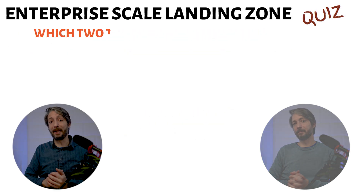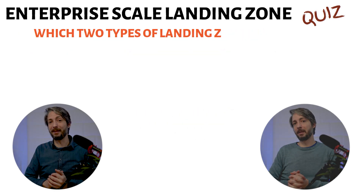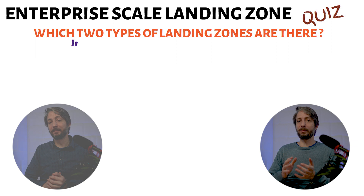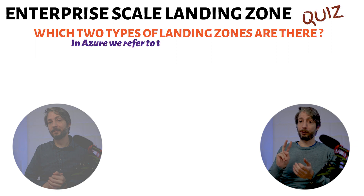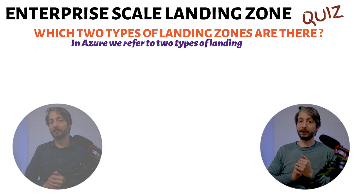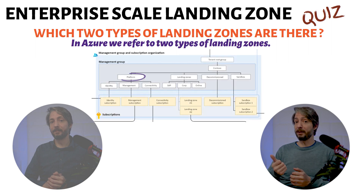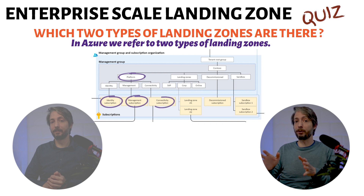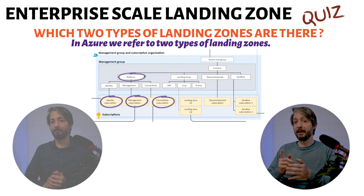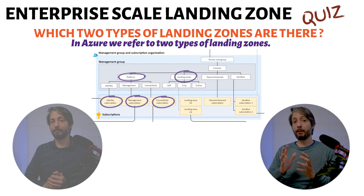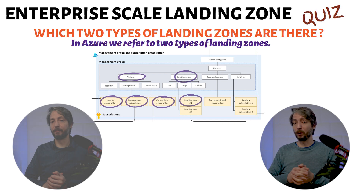What two types of landing zones are there? In Azure, we refer to two types of landing zones. There are the platform landing zones, which contain shared components and are used by all the subscriptions in the environment. In addition to these, we have the application landing zones, which are there for a specific application workload.